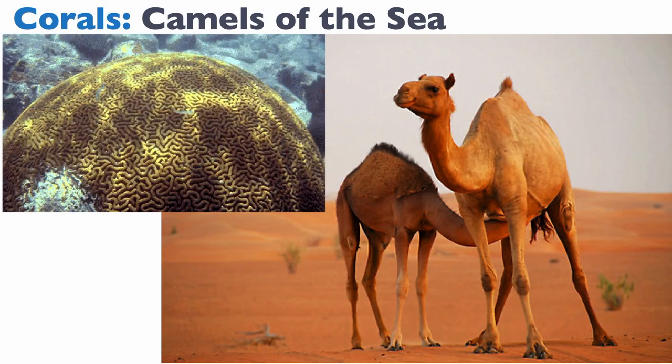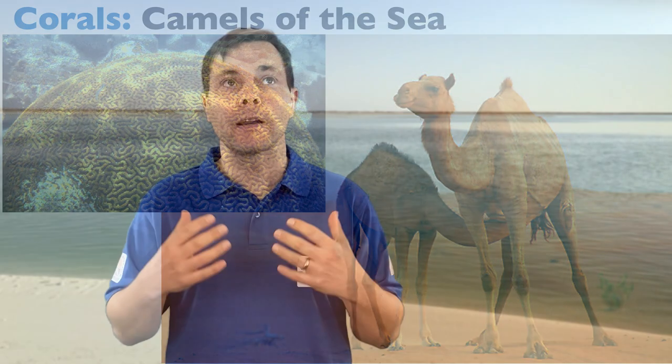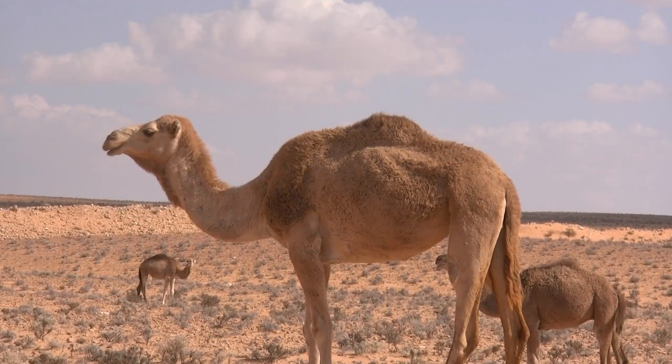The way I like to portray this is to say that corals are the camels of the sea — just like a camel has a hump and can survive with very little nutrients, corals not only survive but thrive there. This is what they are adapted to do well in. So nutrient supply is a big control on carbonate production.